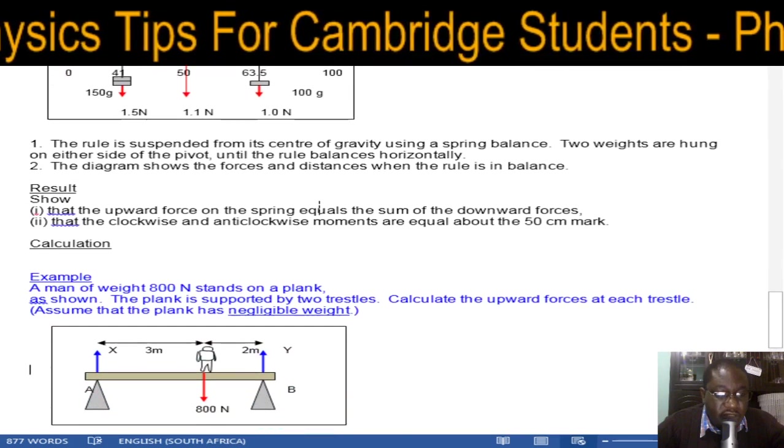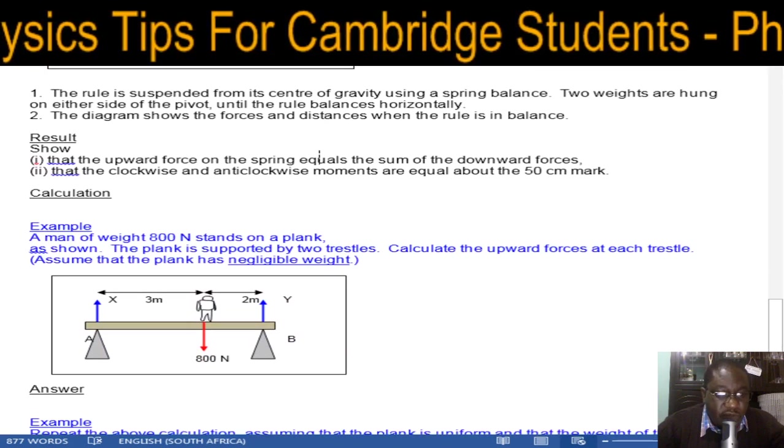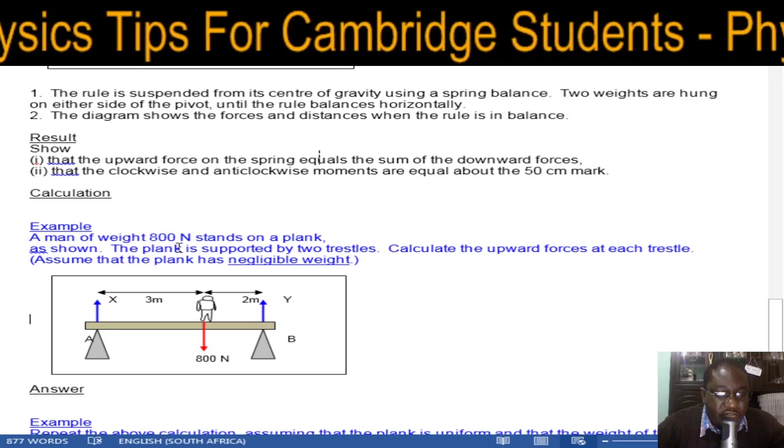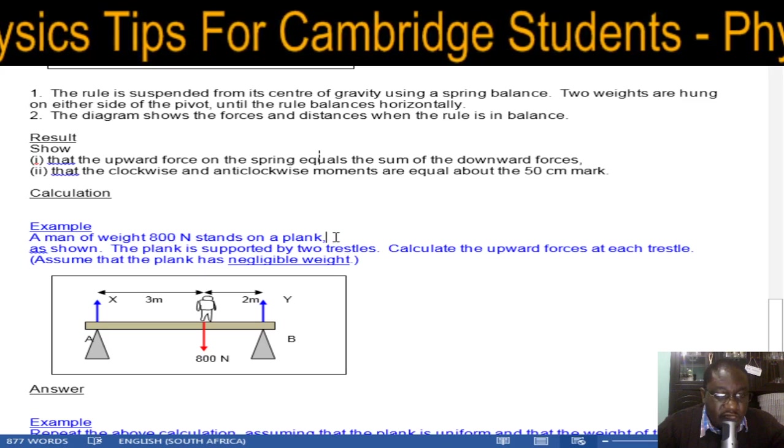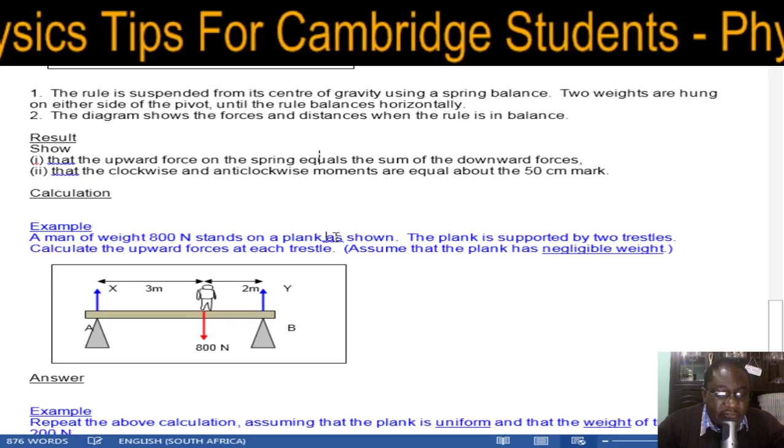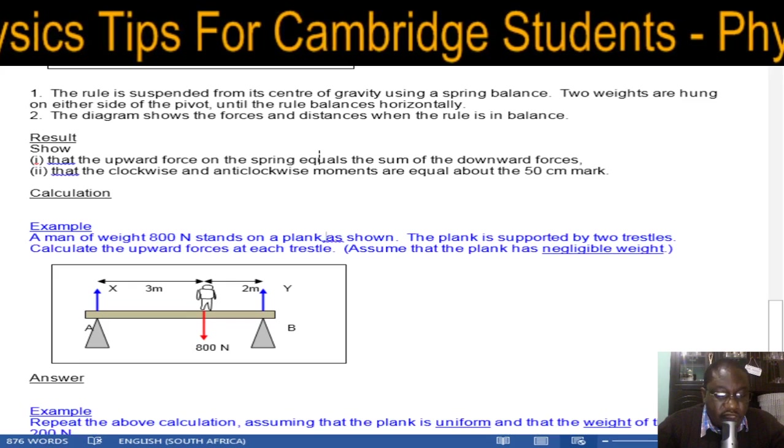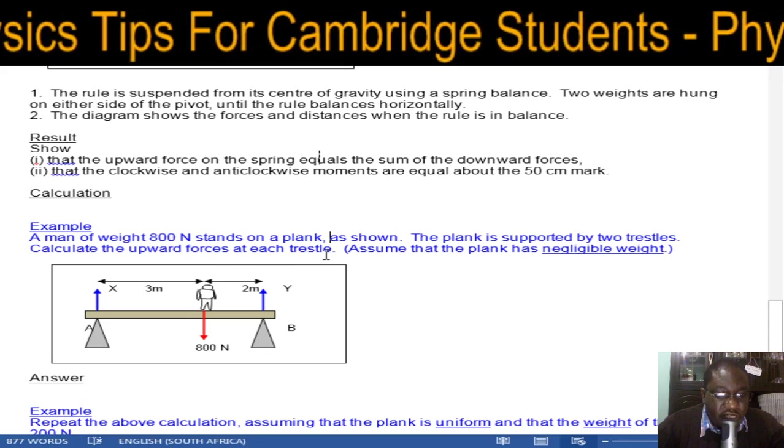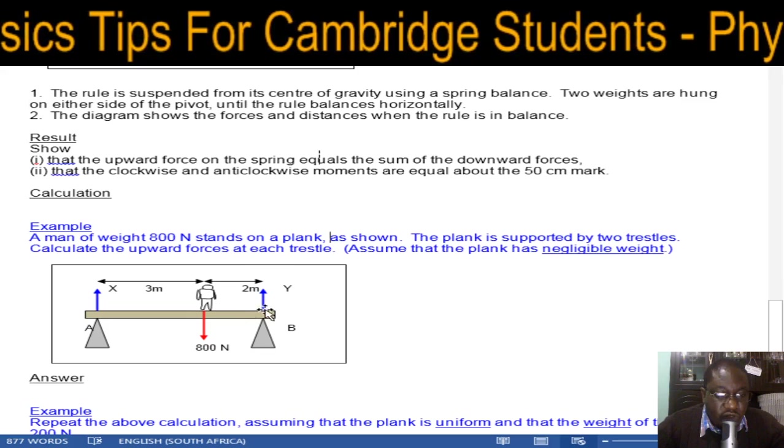Now, calculations. The first example: a man of weight 800 newtons stands on a plank as shown. The plank is supported by two trestles. Calculate the upward forces at each trestle.